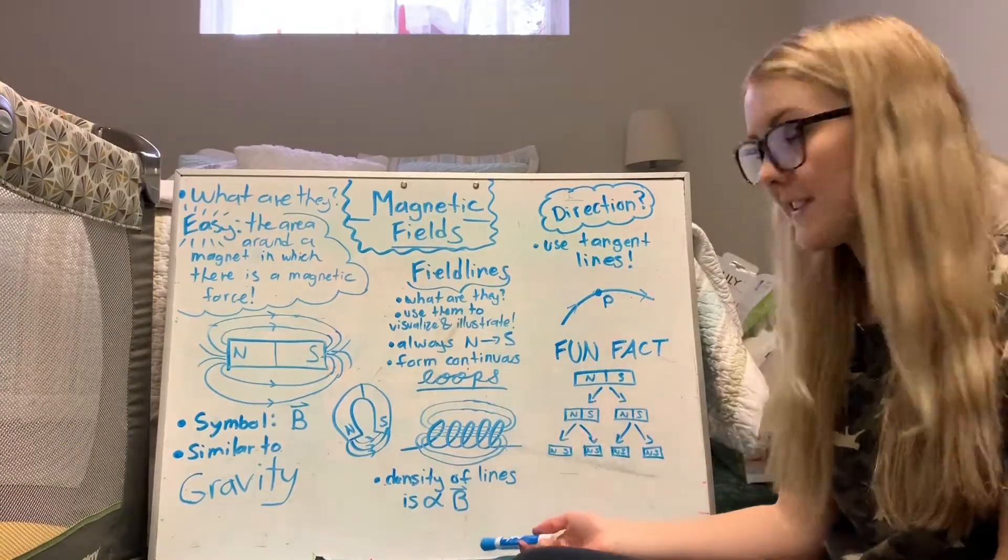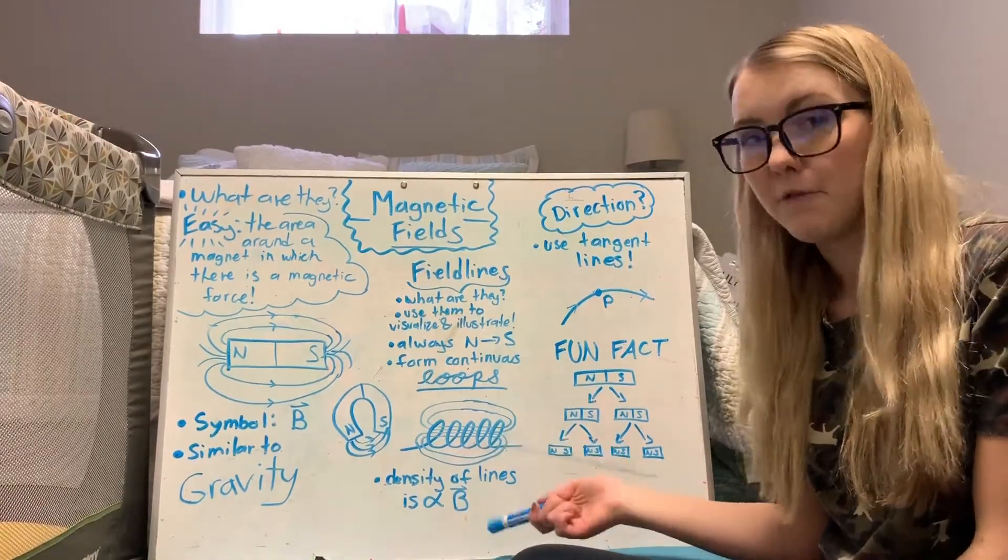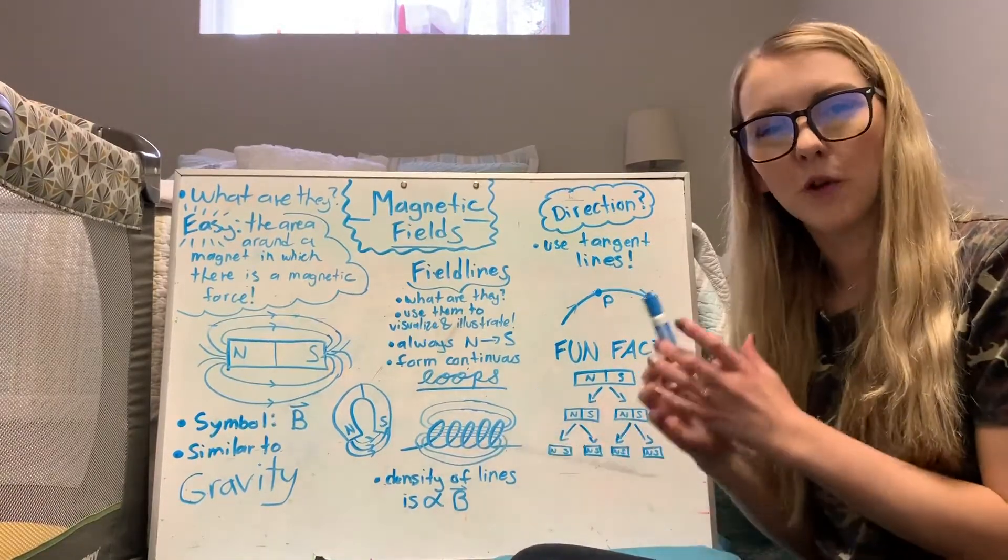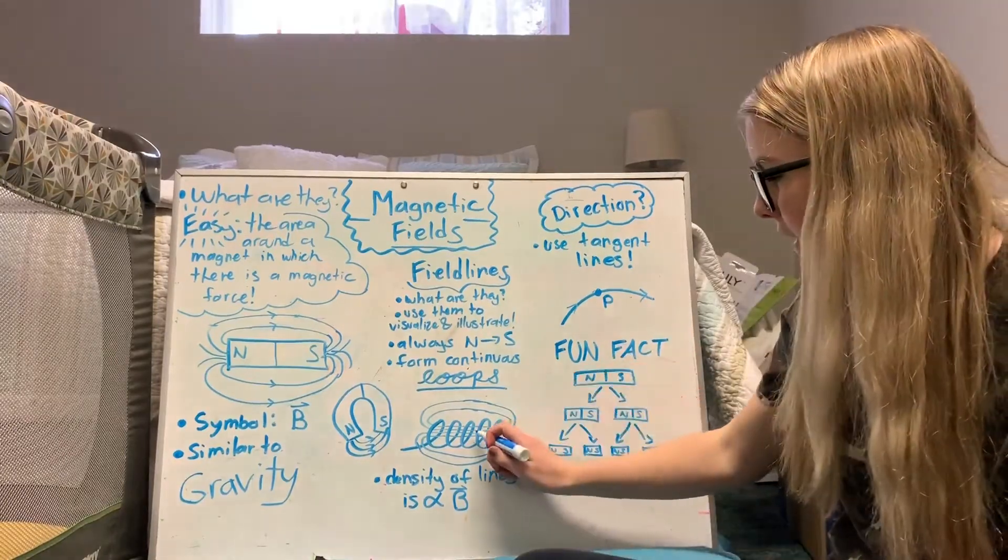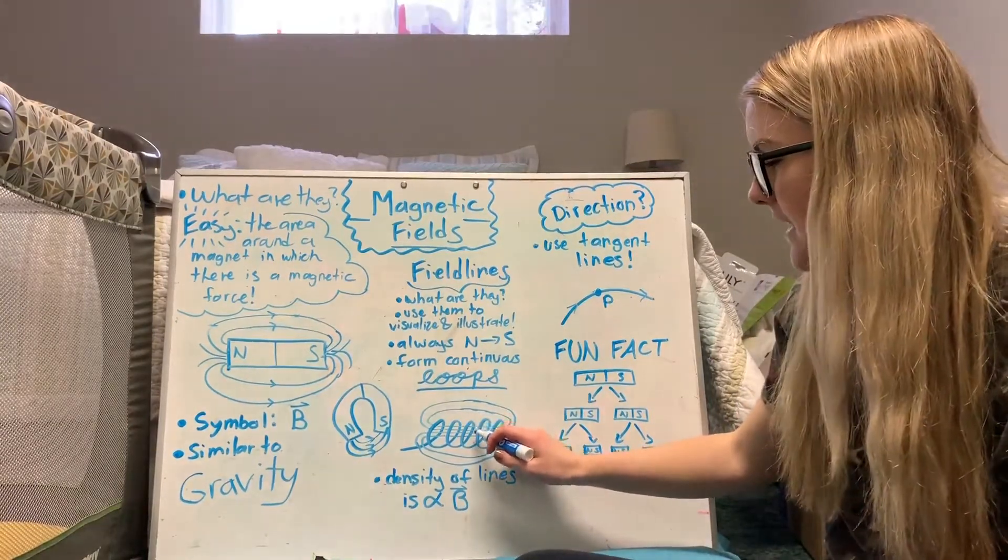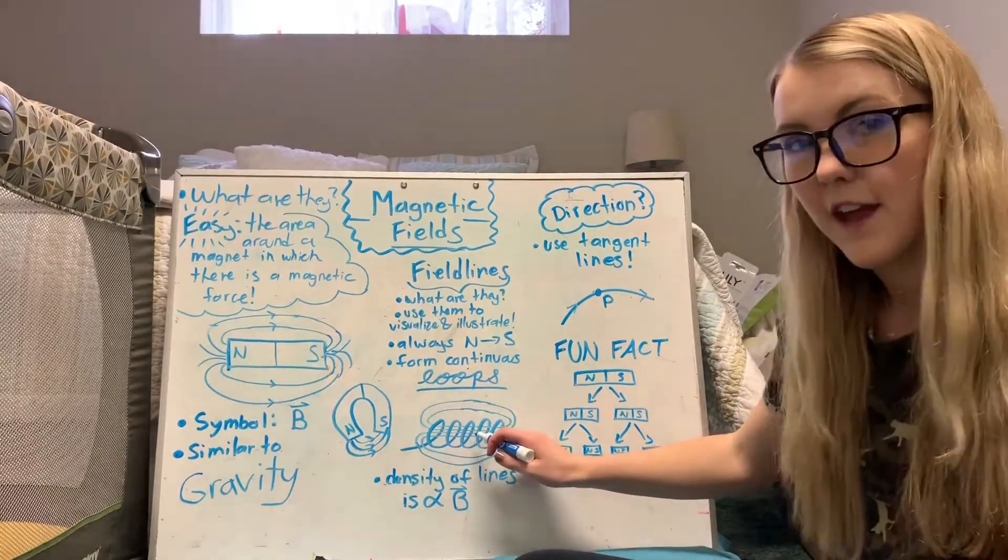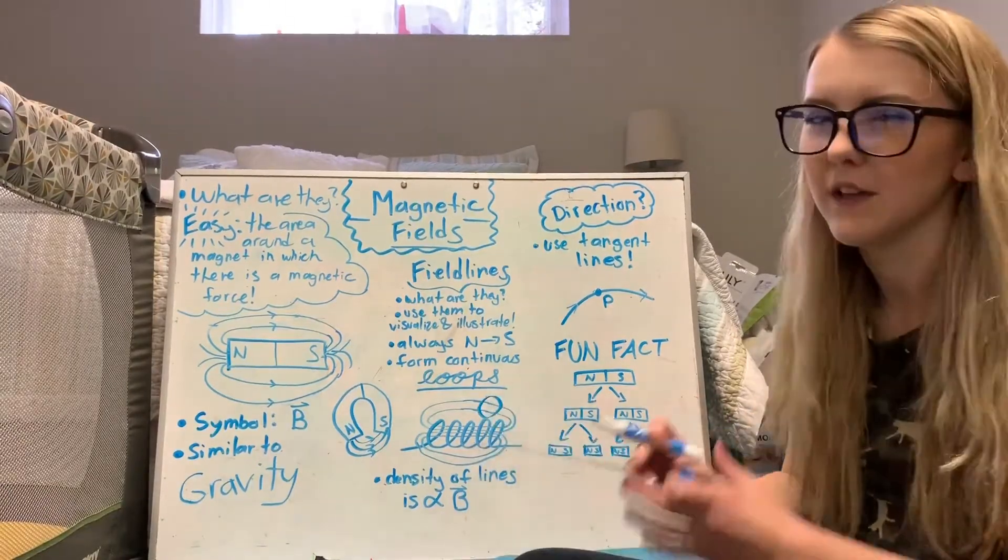And then another thing to note is that the density of the lines is proportional to the field, which basically means if there's more lines there then the field is stronger. So right in the center of this solenoid here the lines are super close to each other and that means that the field is going to be stronger there than it is over here where there's only two lines going through an area.